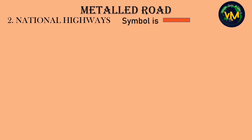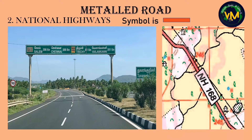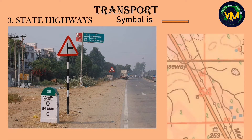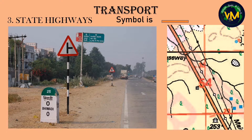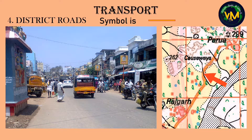Moving on to national highway: the symbol is magenta or red. It will be written as NH and the number of that NH will be written — in this case it is NH 168. State highway symbol will be just a line in orange color. District roads are connecting many districts and will be yellow in color. This picture shows the three important metal roads found in our topographical map — we have only the national highway, the state highway and district roads; express highways are not there.